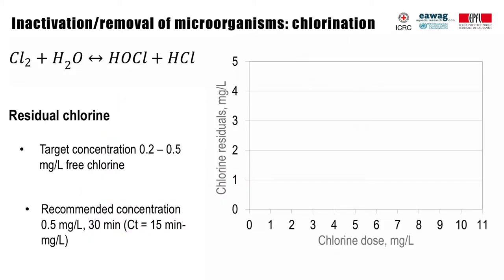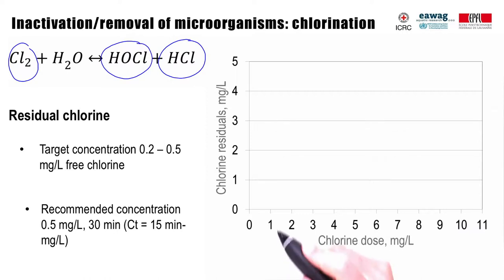When chlorine is dissolved in water, it forms an equilibrium between chlorine, hypochlorous acid and hypochloric acid. When chlorine is added to water, it reacts first with reduced compounds and is consumed. At a higher dose, it reacts also with organic matter and nitrogen species to form chloroorganic and chloramine compounds.